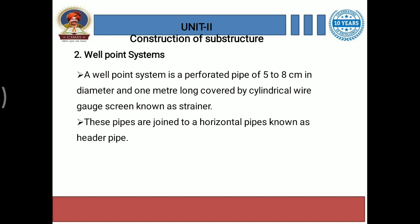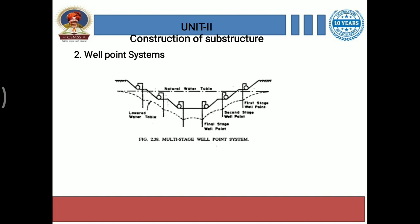The next method is the well point system. In the well point system, a perforated pipe of 5 to 8 centimeters in diameter and one meter long is covered by a cylindrical wire mesh screen known as a strainer. These pipes are joined to horizontal pipes known as header pipes.